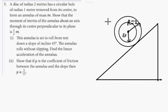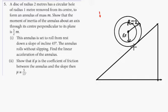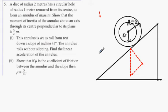Now we're going to figure out the components of weight. Our weight is going directly down into the plane. We have to resolve perpendicular and parallel. Our angle is 45 degrees, which makes this angle 45 degrees as well.